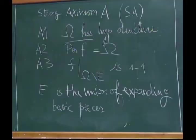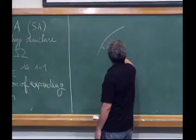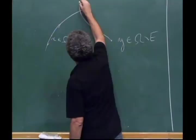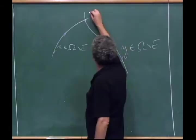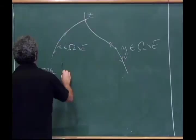If we have a Strong Axiom A map, each point in the non-wandering set has a unique pre-image in the non-wandering set, so we have well-defined unstable manifolds. If you have a point x in omega minus E, you have an unstable manifold; another point also in omega minus E has another unstable manifold, and these may intersect at a non-wandering point z. So we introduce another condition: strong transversality.